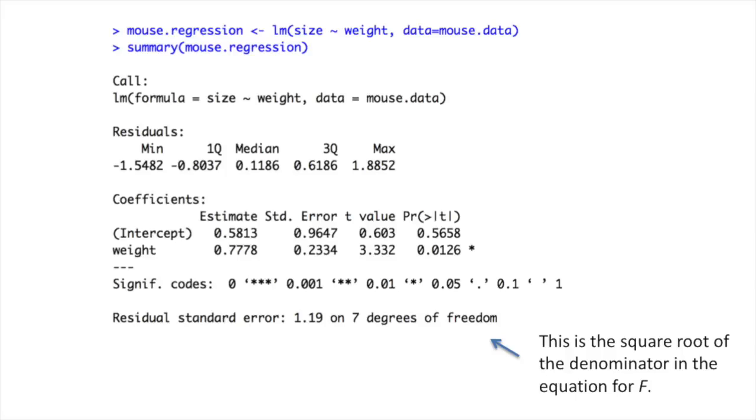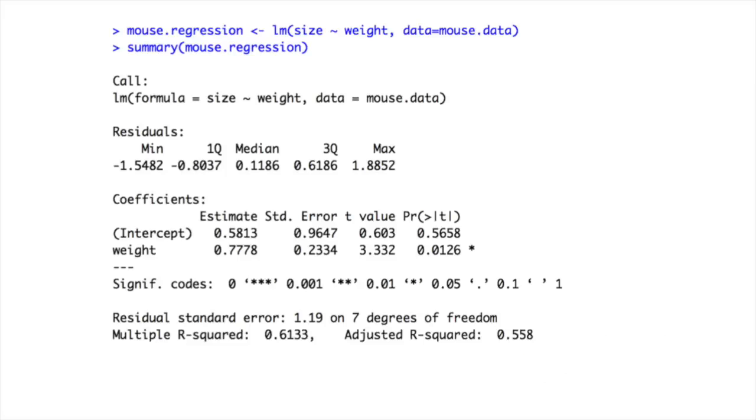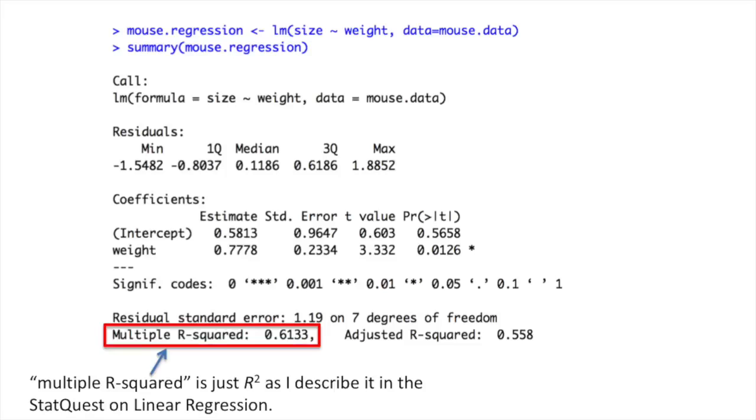The next line, the residual standard error, is the square root of the denominator in the equation for f. The next line tells us the multiple r-squared and adjusted r-squared values. Multiple r-squared is just r-squared as I describe it in the StatQuest on Linear Regression. It means that weight can explain 61% of the variation in size. This is good.